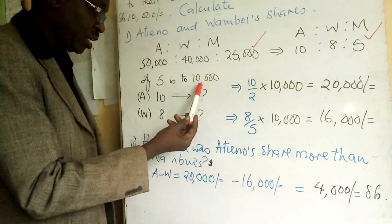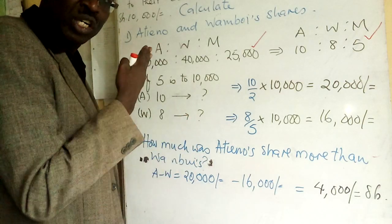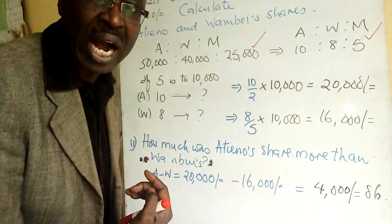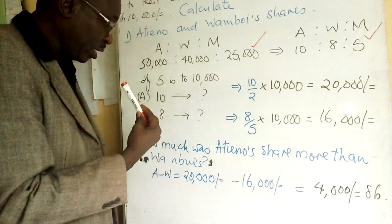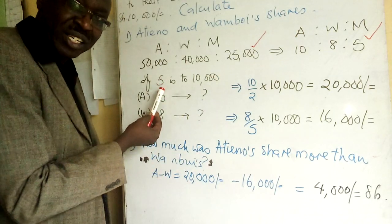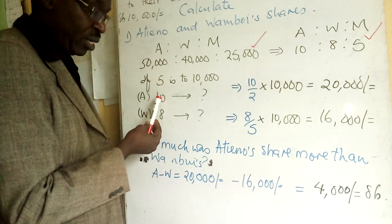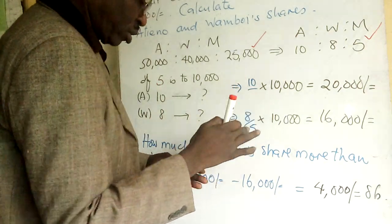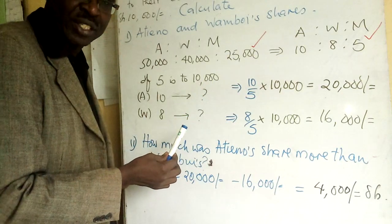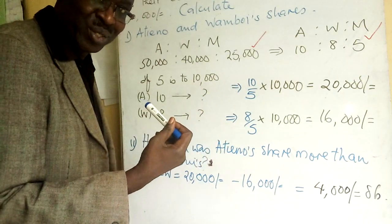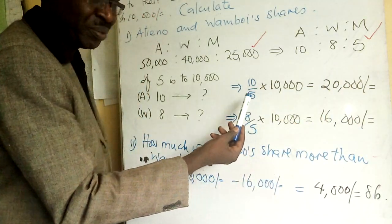What about Atieno, who had ten parts — what will she get? We use that comparison of what came in to get what goes back. For five parts I get ten thousand; if somebody had double the parts, we cross multiply: 10 times 10,000 over 5. Five goes into ten twice, so it was double — double of ten thousand is twenty thousand.